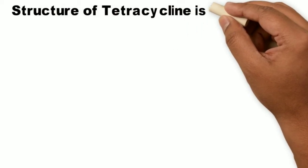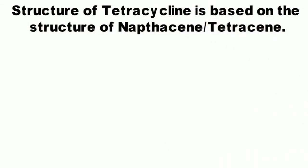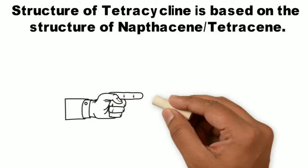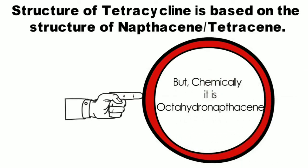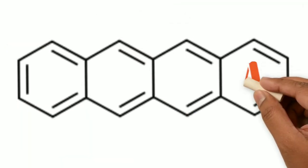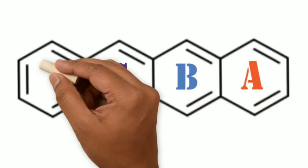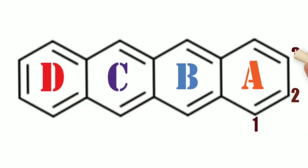The structure of tetracycline is based on the structure of naphthacin or tetracin, but chemically it is octahydronaphthacin. This means after adding eight hydrogen atoms and doing various substitutions to the naphthacin ring, we can derive the structure of tetracycline. The structure of tetracin is composed of four rings — A, B, C, and D — and if we number the ring we start from the right-hand side: 1, 2, 3, 4, 5, 5a, 6a, and so on.